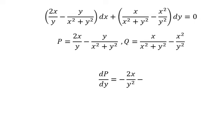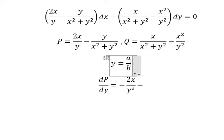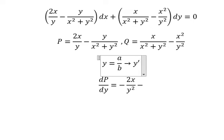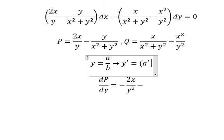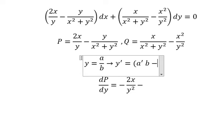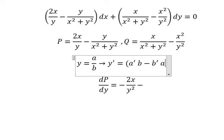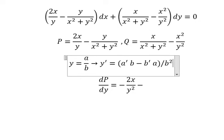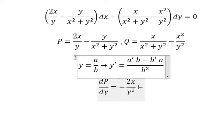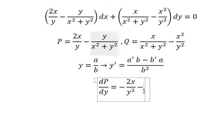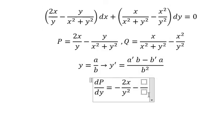Now for this one we can apply the quotient rule of derivatives. We have Y equals to A over B, so if we do the first derivative, we need to do the first derivative of A multiplied by B, minus the first derivative of B multiplied by A, all over B squared. Now we can apply that formula here.